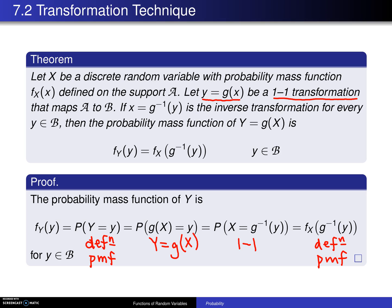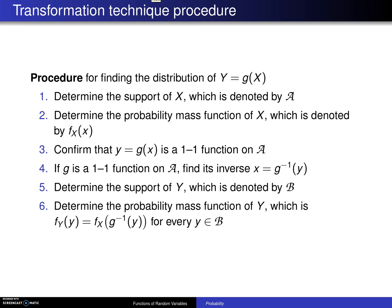This leads us to basically an algorithm. This one will have six steps for finding the distribution of Y equals g of X. And in fact, not only is it finding the distribution, in this case more specifically, it's finding the probability mass function of Y equals g of X.